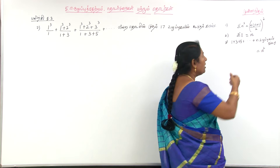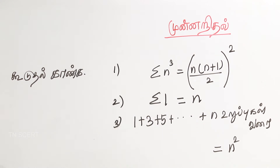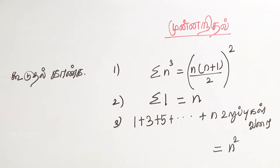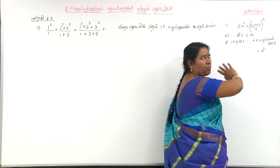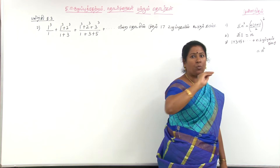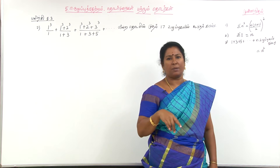Now let's look at sigma n³. The formula is n into n plus 1 by 2, the whole square. That means 1 plus 3 plus 5 plus etc. You have to learn n².